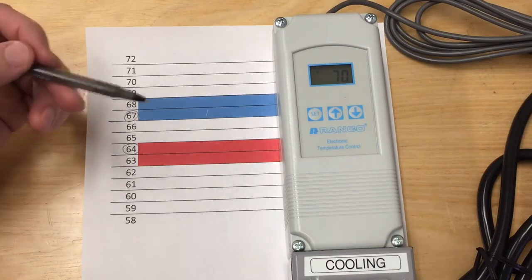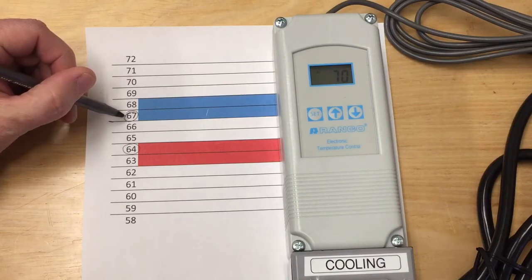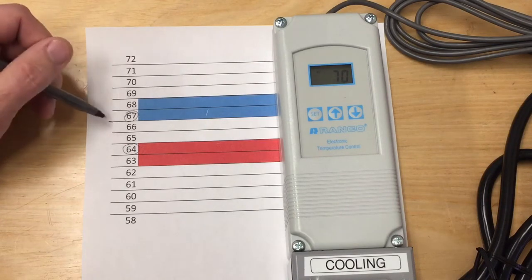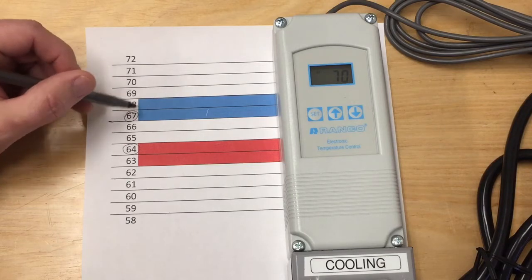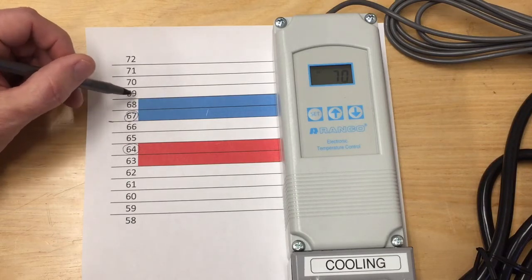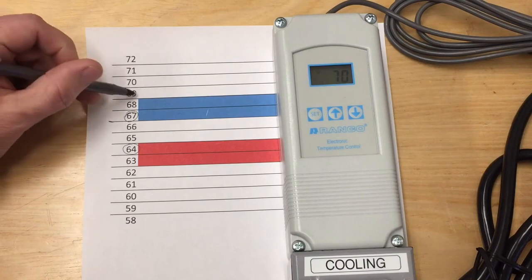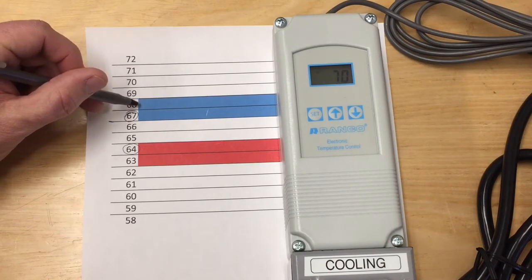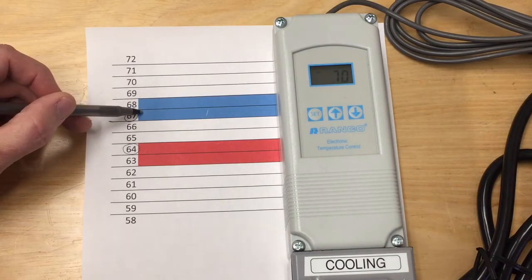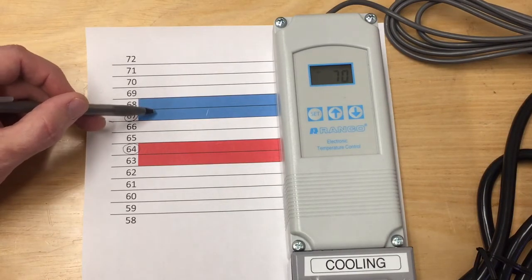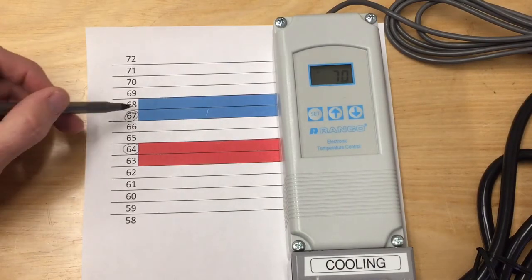You first set your low limit for cooling, which in this scenario I have at 67 degrees, and then you set a differential. In this scenario I have a two-degree differential, so as soon as it gets to 69 into that band, it will turn on and come back down through 68 to 67 before it turns off, and it'll stay in here as the fermentation happens.